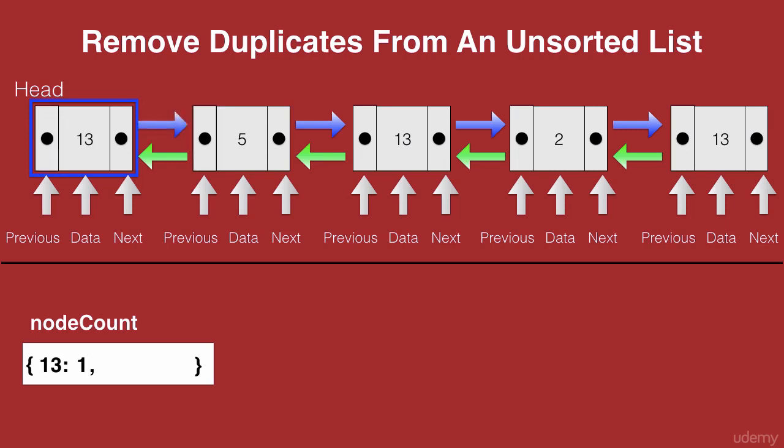Then we move to the next node and we see that this node has the data 5 and we see that 5 is not present in the dictionary. So we add 5 into the dictionary with the count of 1 which means 5 has been visited once.